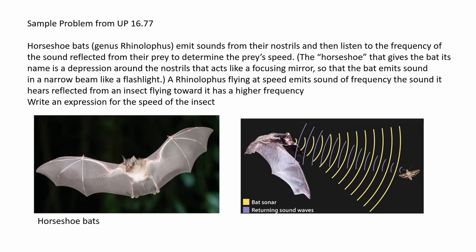Horseshoe bats, or the genus Rhinolophus, emit sound from their nostrils and then listen to the frequency of the sound reflected from their prey to determine the prey's speed. The horseshoe that gives the bat its name is a depression around the nostrils that acts like a focusing mirror, so the bat emits sound in a narrow beam like a flashlight.